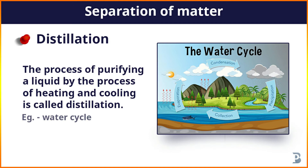After this, the droplets again come to the earth in the form of rain. In this process, water converts into vapor because of evaporation, and vapor converts back into water because of condensation. In this way we can see that purifying a liquid by evaporation and condensation is called distillation.